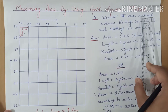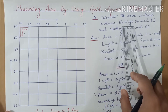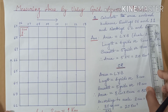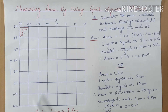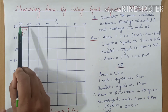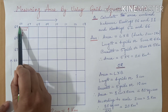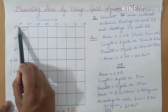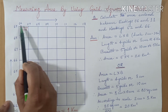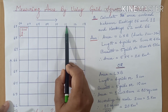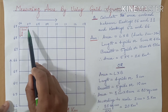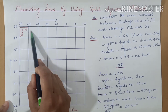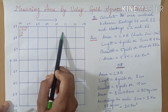Calculate the area enclosed between easting 6 and 11. If we see the eastings — 6, 7, 8, 9, 10, 11 — starting from 6 up to 11, that gives us 5 grids.